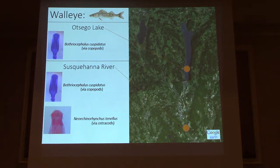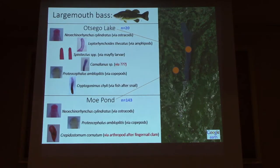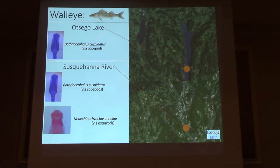In the first example, we have walleye sampled from two sites: Otsego Lake and the Susquehanna River south of Cooperstown. In Otsego Lake, there's been a walleye reintroduction stocking program year after year. In both walleye populations we have a tapeworm called Botryocephalus cuspidatus, which walleye acquire via consuming copepods or a carrier host. This is a generalist tapeworm found in other fish in the lake as well.